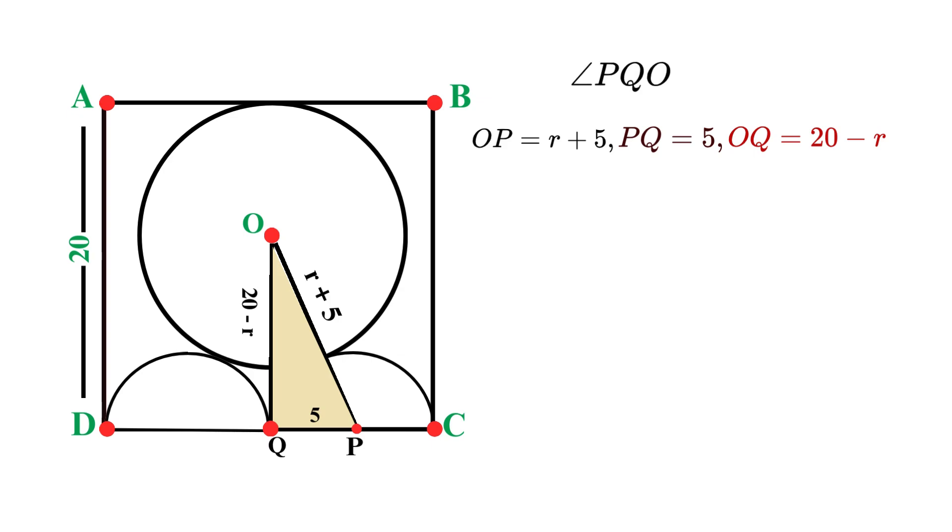Now we have a right triangle PQO. Let's identify its three sides. The hypotenuse, the longest side opposite the right angle, which is OP, and we just determined it equals r plus 5. The horizontal leg along the base, which is PQ, that equals 5. And the vertical leg is OQ, which we found earlier, 20 minus r.